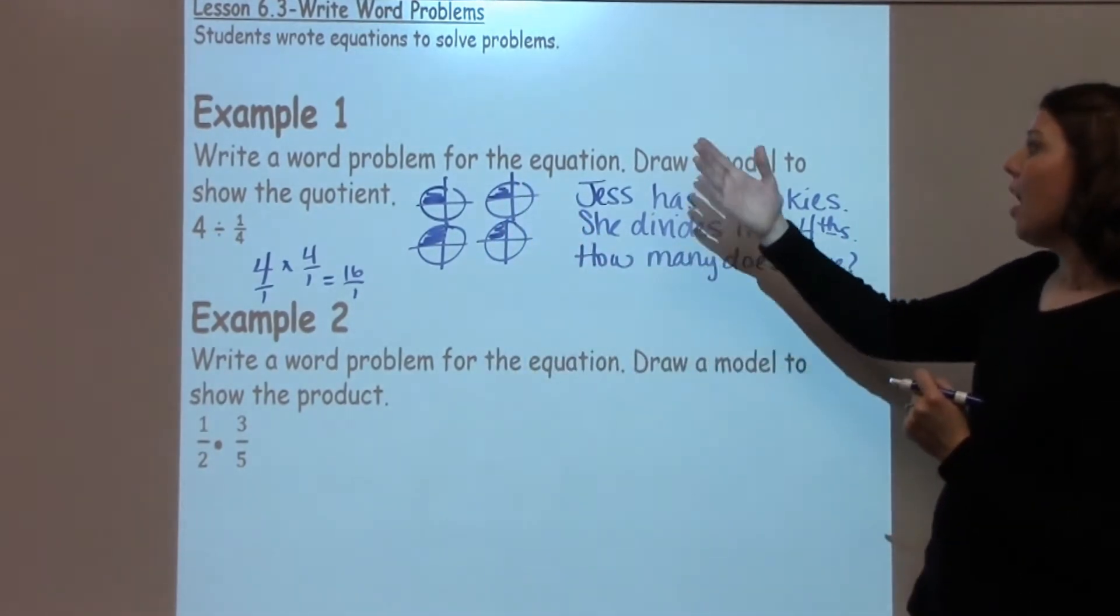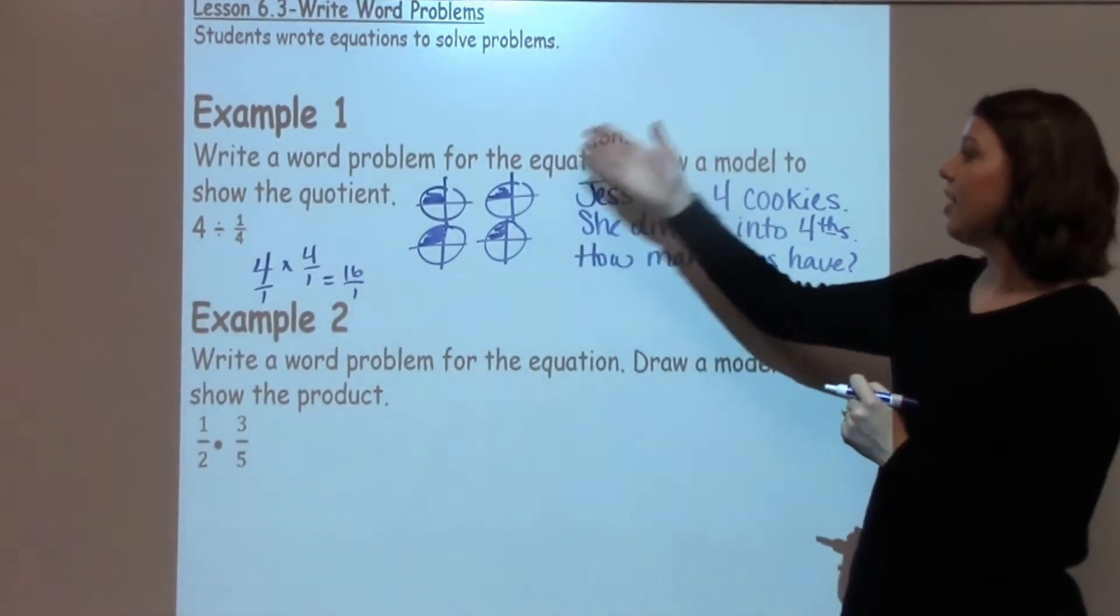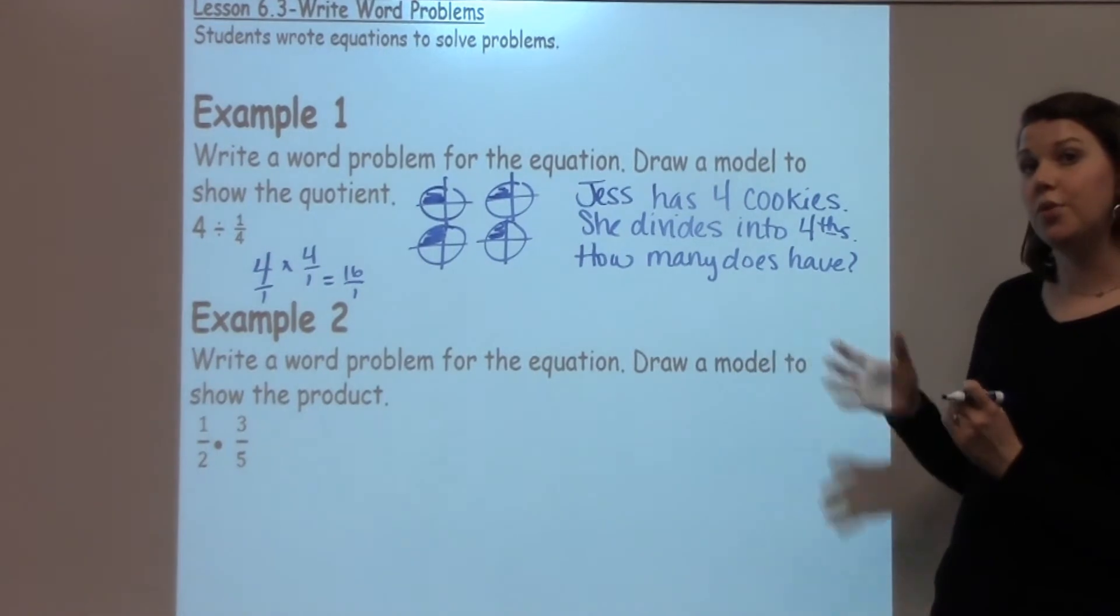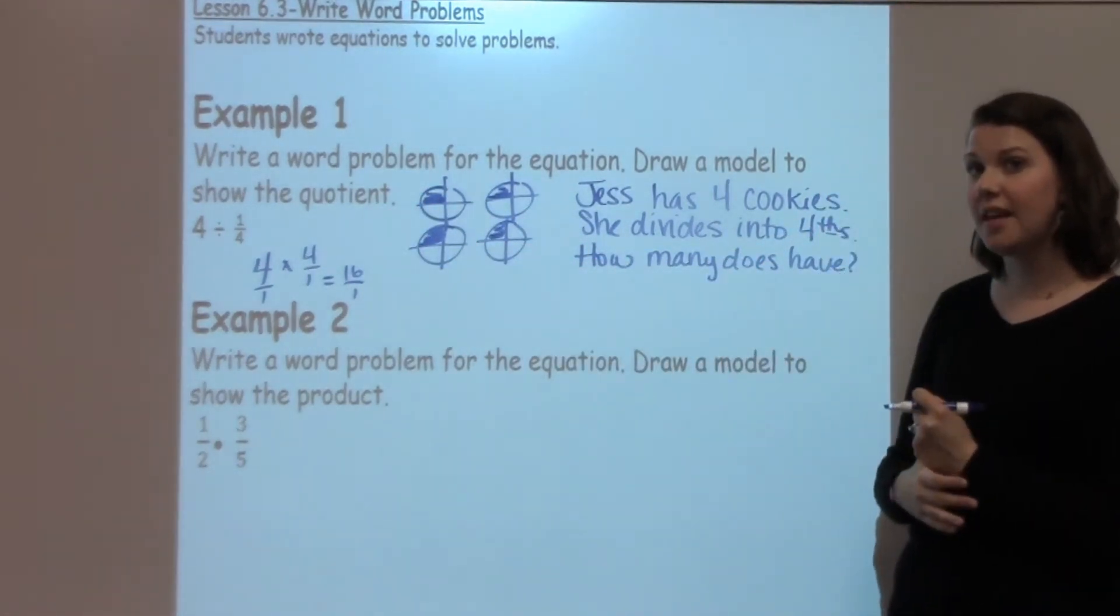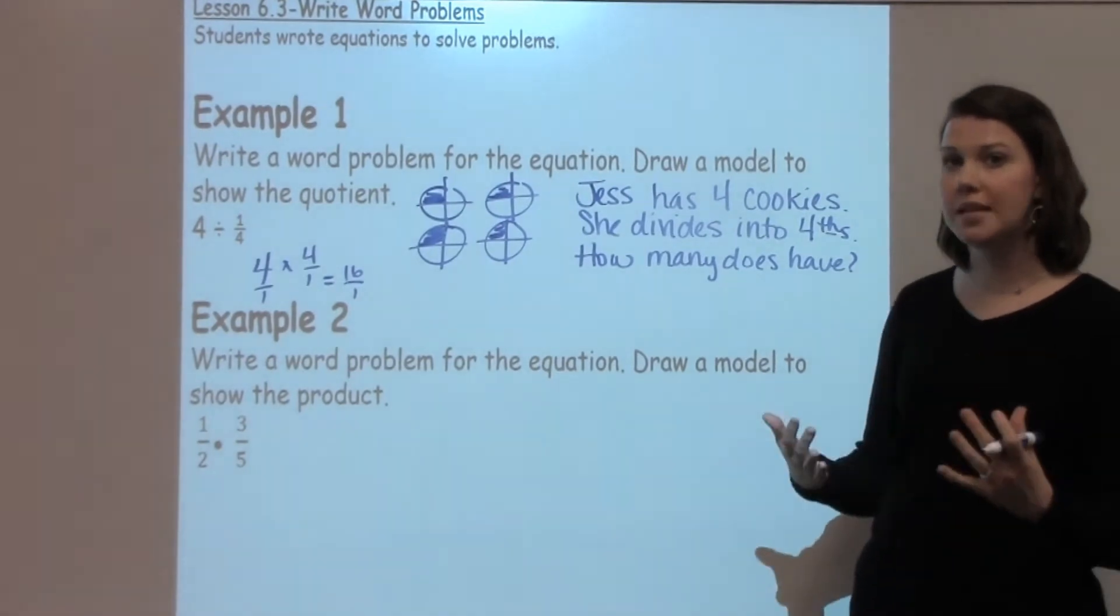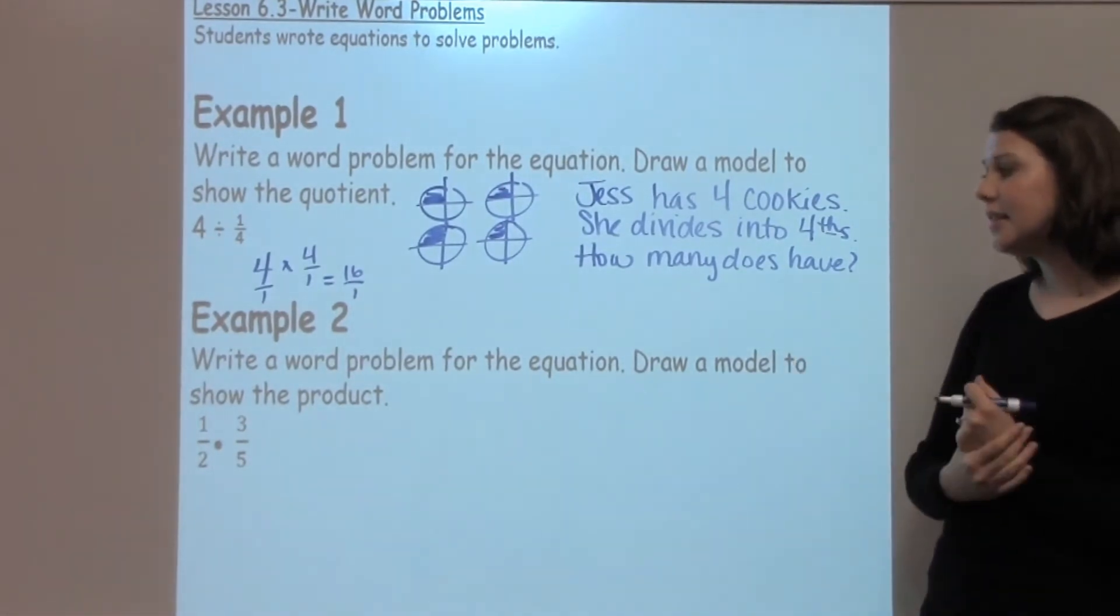So here is my model for my answer, and then here is my word problem to model what would go along with this. Again, remember, it's really easy to divide things like food or cookies or pizzas or pies that are easily divided.